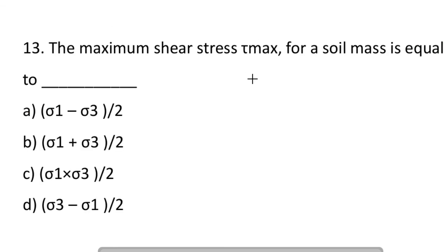Next question: the maximum shear stress tau max for the soil is equal to. Option A: sigma 1 minus sigma 3 divided by 2. Option B: sigma 1 plus sigma 3 divided by 2. Option C: sigma 1 into sigma 3 divided by 2. Option D: sigma 3 minus sigma 1 divided by 2. So the answer is A, sigma 1 minus sigma 3 divided by 2.